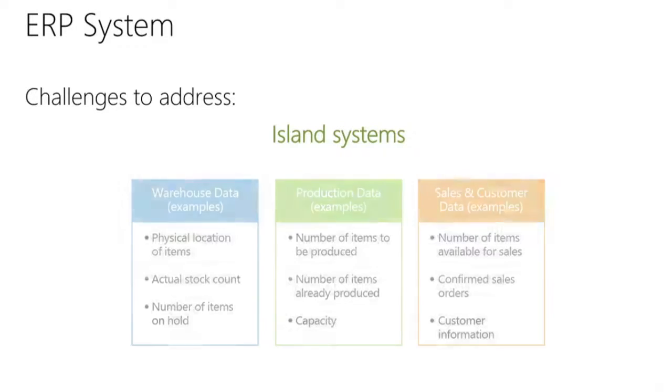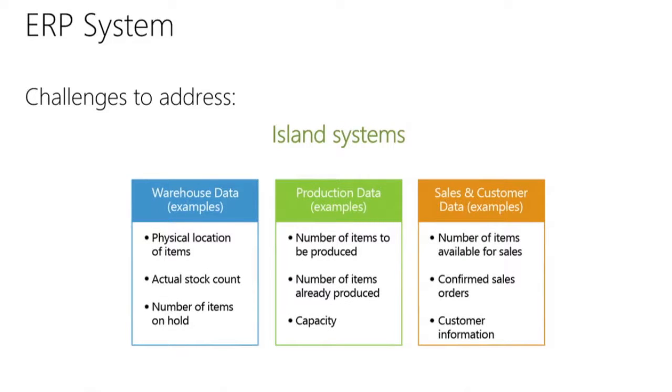For most companies, it's very important that they have fast and correct access to information. This is very important in making appropriate business decisions. This information is stored in different databases when you do not use an ERP system. In that case, one might have island systems, as shown in this slide. Here, the information about warehousing, production, sales, and customer data is found in several databases across the enterprise. Because this information isn't shared, extracting relevant information becomes very difficult. If you can't get this information in time, you might be unable to close the sale.